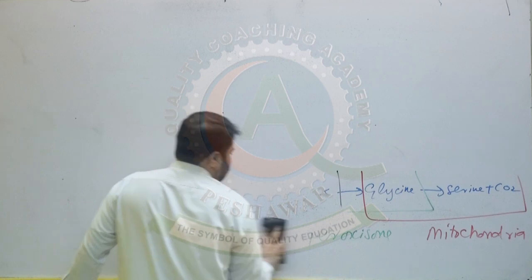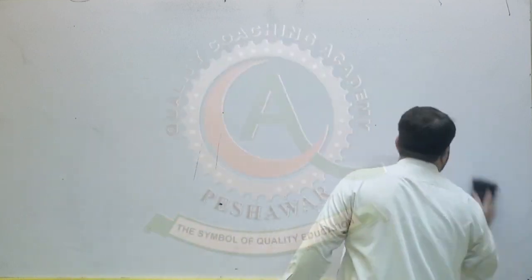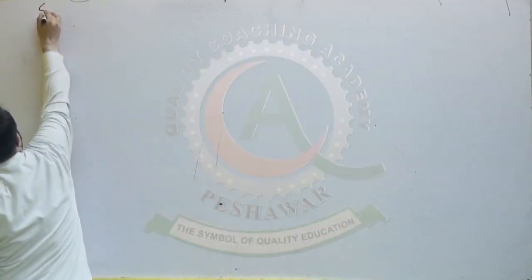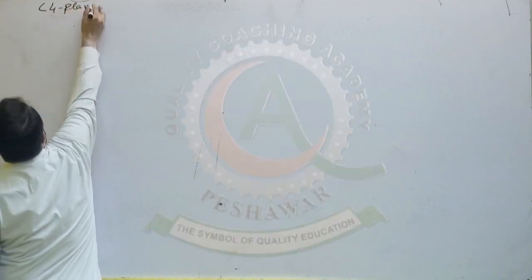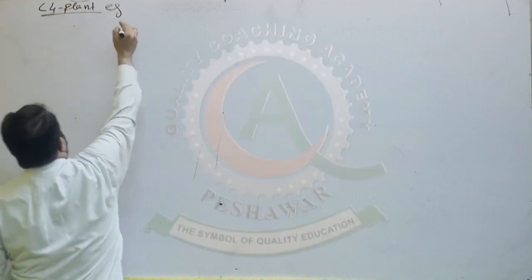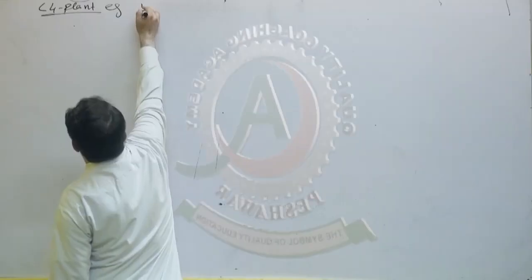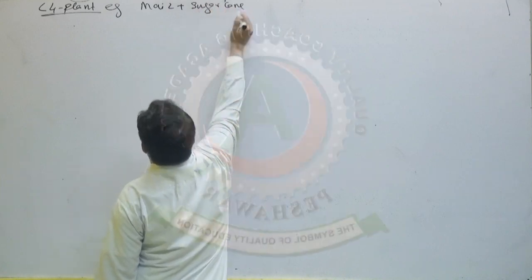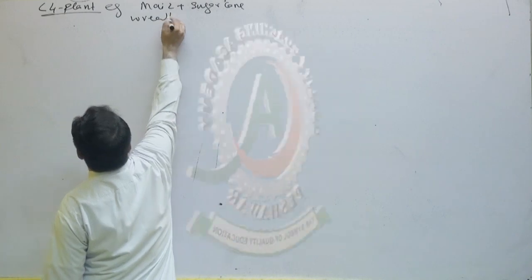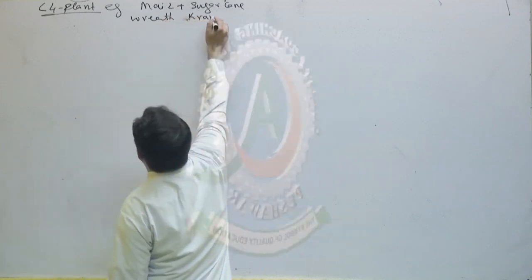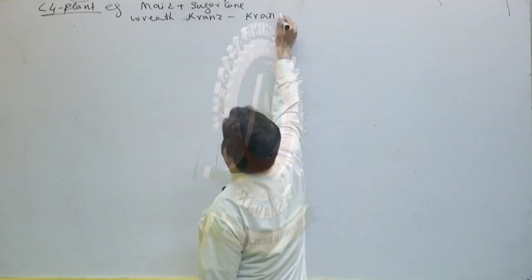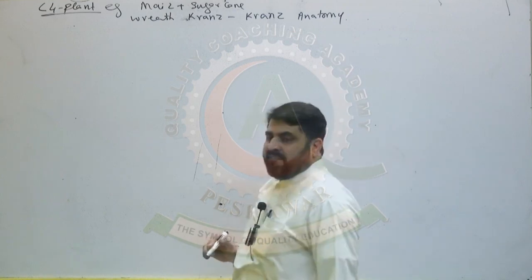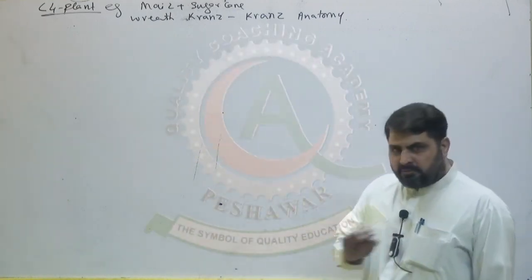Now we discuss C4 plants. C4 plants are those in which the first stable compound is oxaloacetate, a four-carbon compound. Examples include maize and sugarcane. This was first studied by Kranz, which is why the anatomy is called Kranz anatomy. In C4 plants, there is no photorespiration.